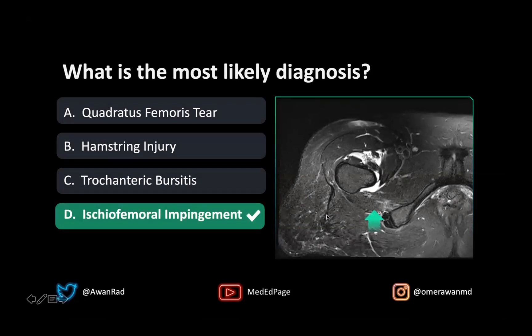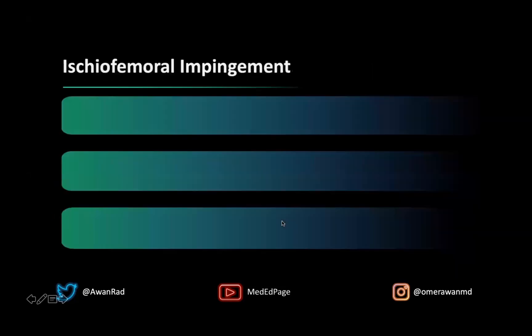Trochanteric bursitis would be fluid deep to the gluteus maximus tendon and muscle — we don't see that here. A hamstring injury would be tendinopathy or partial tearing of these tendons — we don't have that here. There may be some minimal intracellular signal, maybe some degeneration; at most you would call it tendinopathy, but certainly no tear. As for the quadratus femoris, this is not really a tear — just a little bit of edema along the medial aspect of the muscle, not quite feathery or diffuse enough to call a tear. So the best answer is ischiofemoral impingement.